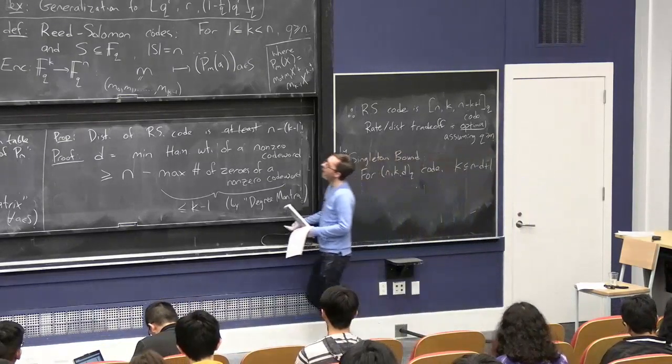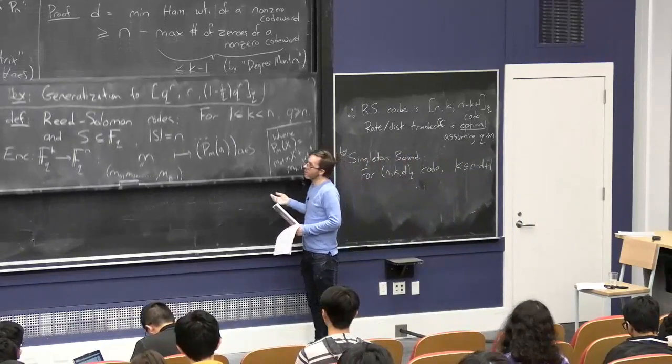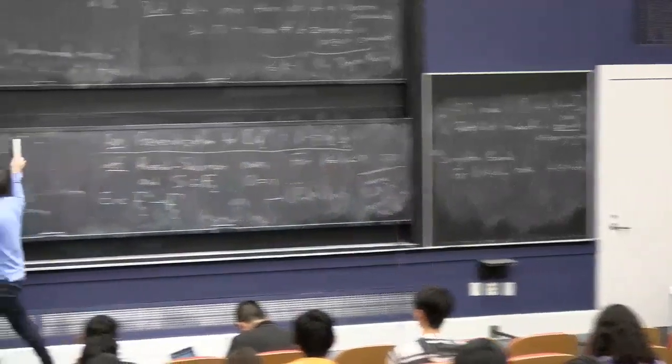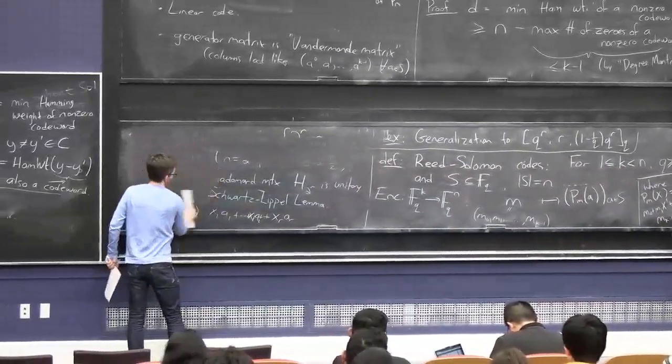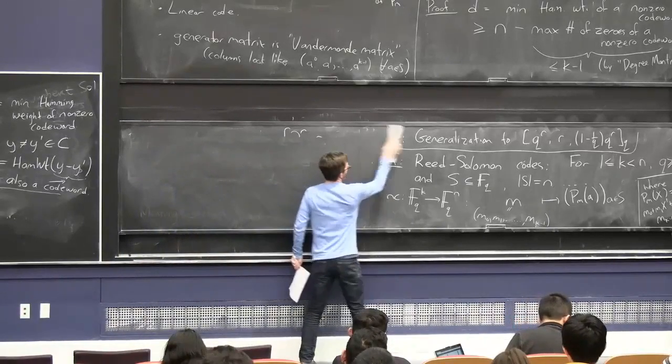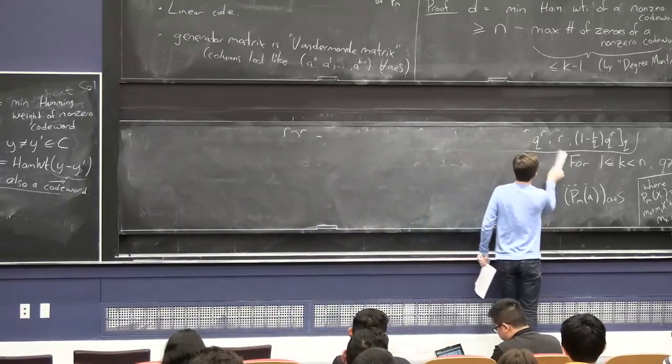OK, so finally, the last thing I want to get to is this potential best of all possible worlds, which is a code that has good rate, good minimum distance, and let's say a fixed alphabet size, such as 2, our favorite alphabet size.